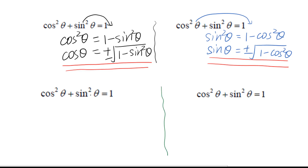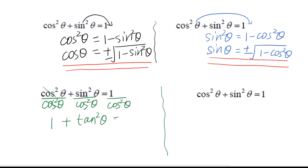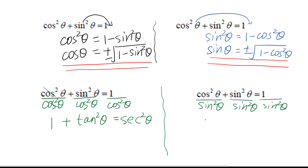For this trig identity, divide both sides by cosine squared theta. You will get 1 plus sine squared theta over cosine squared theta, which gives 1 plus tangent squared theta equals 1 over cosine squared theta, which is secant squared theta. Now if we divide both sides by sine squared theta instead, cosine squared theta over sine squared theta is cotangent squared theta, and you get cotangent squared theta plus 1 equals cosecant squared theta.